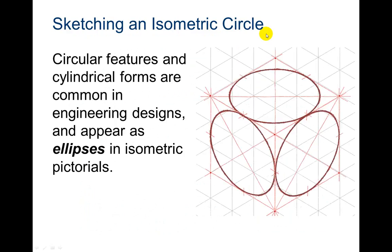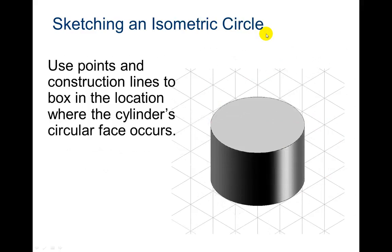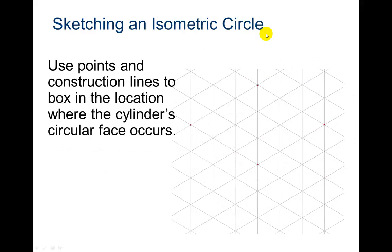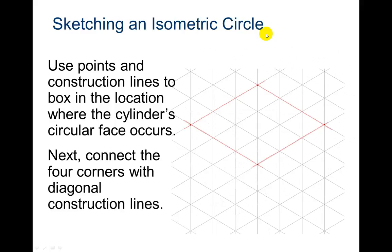This is if you're wanting to do circles. Sketching with isometric circles, circular features, and cylindrical forms are common in engineering designs and appear as ellipses in isometric pictorials. So here's the next example. Use points and construction lines to box in the location where the cylinder's circular face occurs.